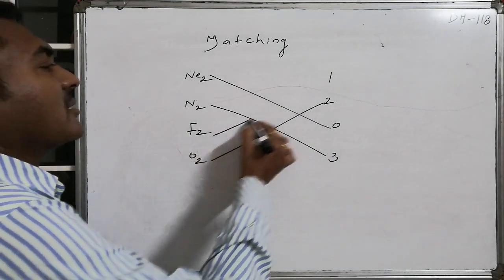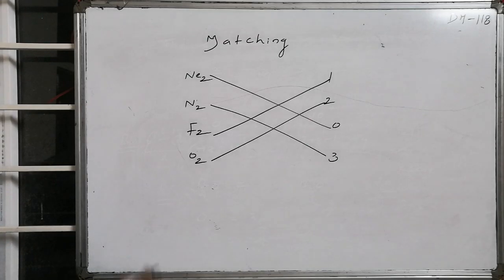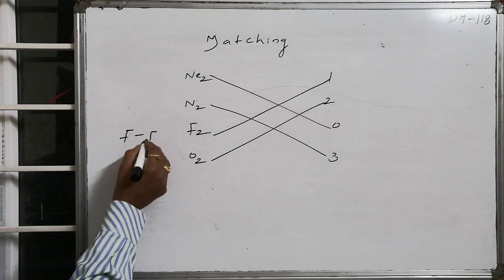F2 is present with one single bond, hence F2 maintains a single bond. This is F and F, F2.